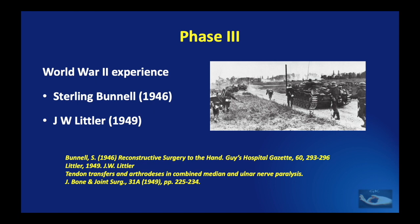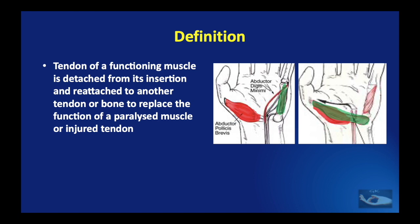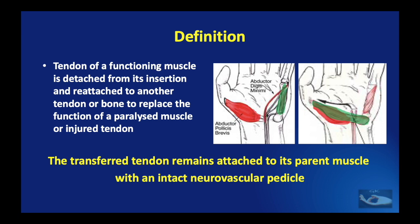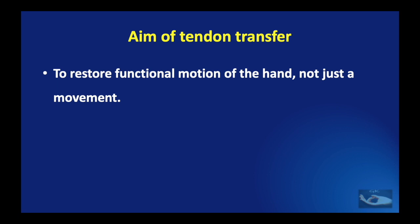The actual definition of a tendon transfer is when a tendon of a functioning muscle is detached from its insertion and reattached to another tendon or bone to replace the function of a paralyzed muscle or injured tendon. In a classical tendon transfer, the transferred tendon remains attached to its parent muscle with an intact neurovascular pedicle. The aim of a tendon transfer is to restore functional motion of the hand and not just a movement, so the transfer to be done depends on what functional movement is required.